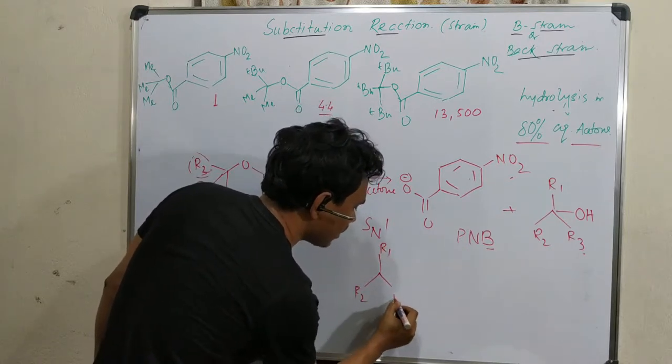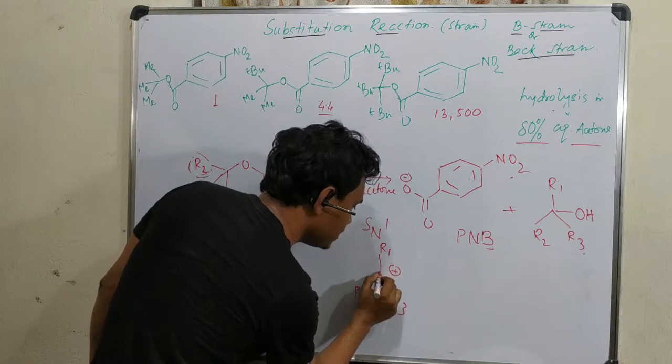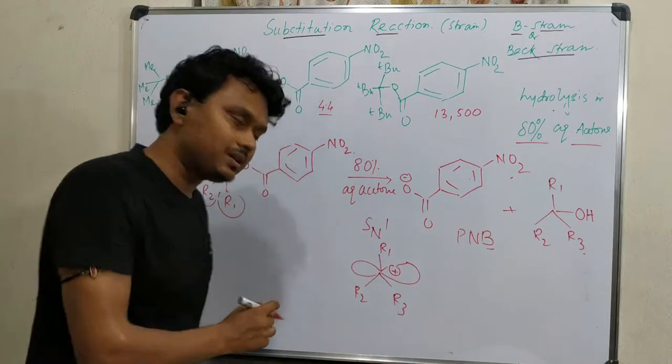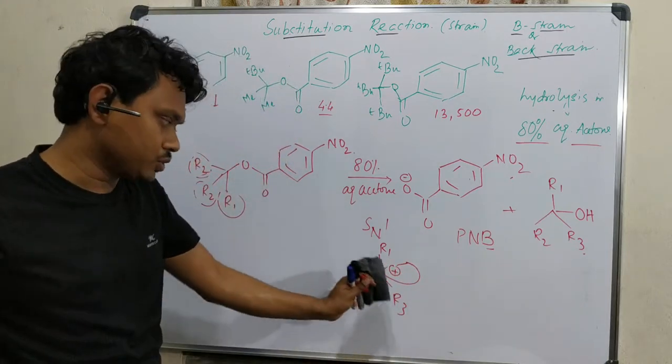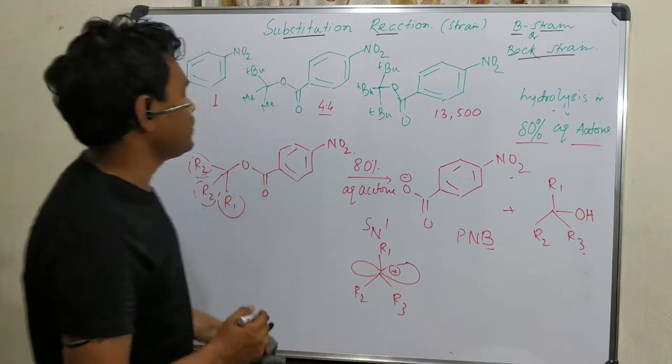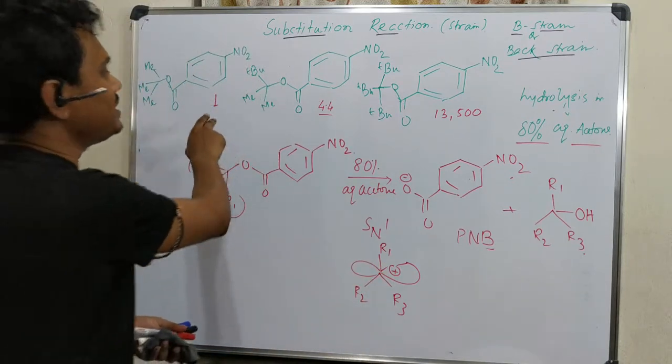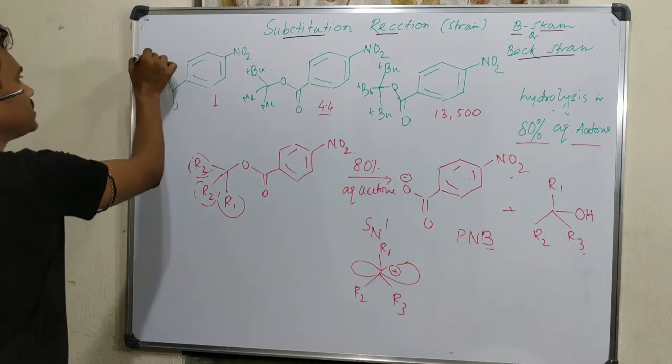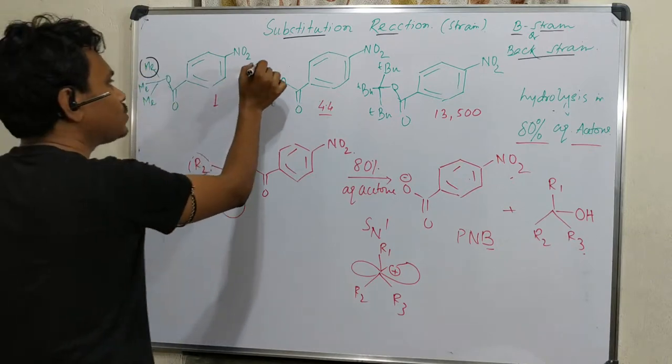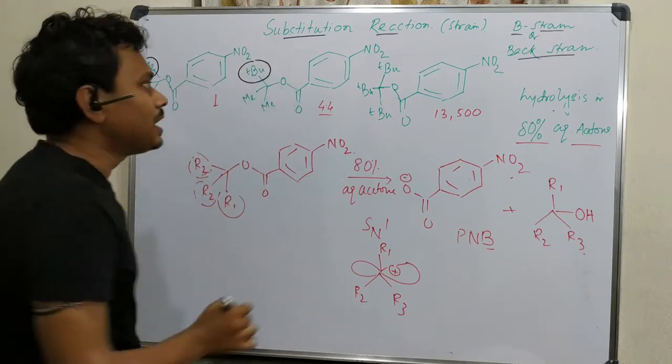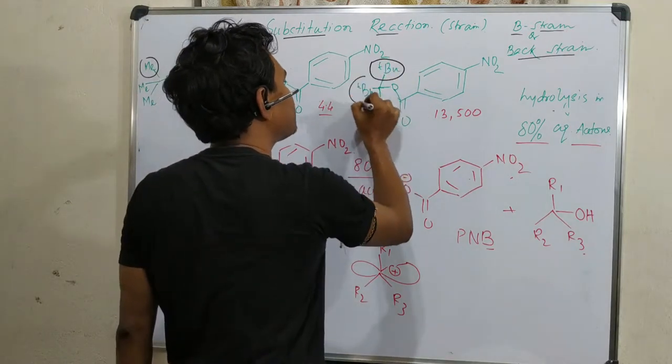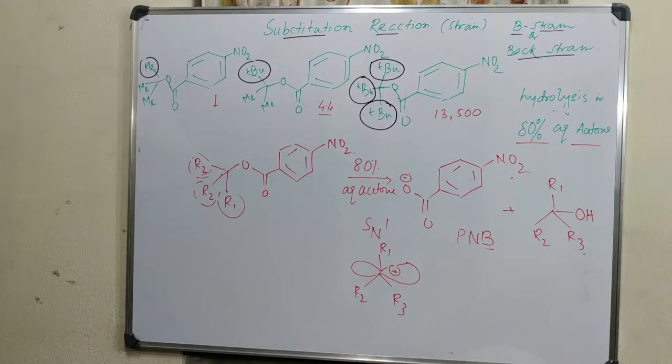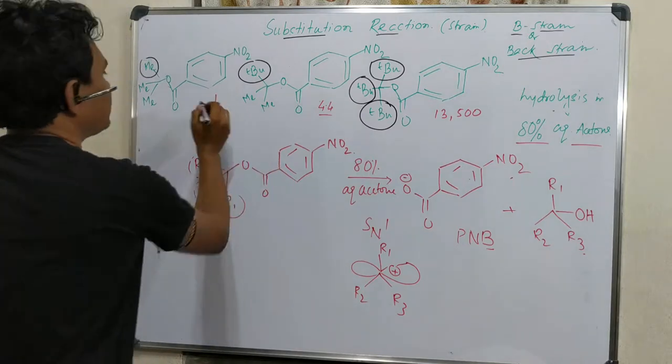The SN1 reaction involves a carbocation intermediate: R1, R2, R3 carbocation with P orbital. And the probability of attack of nucleophile is equal from both sides. This is the carbocation form. Now you can see what is the difference here. The difference is that here methyl group is there, here three are methyl, here one methyl is substituted by tertiary butyl, and another case here three groups are substituted by this tertiary butyl. So in the example third the bulkiness is extremely high.